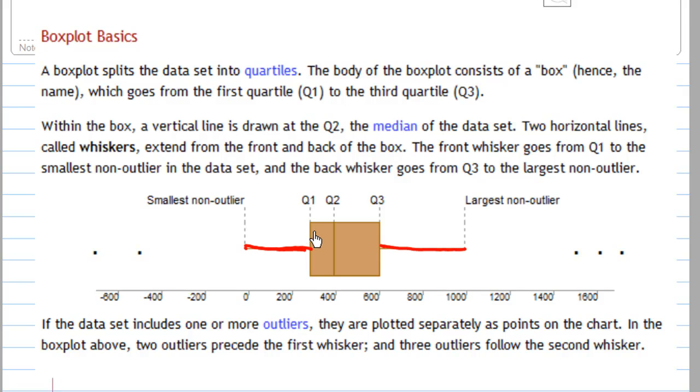The box plot shows Q2, Q1, and Q3 as three vertical lines in this diagram.